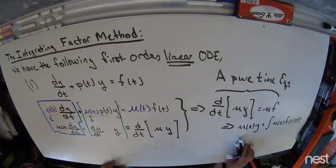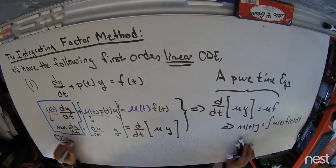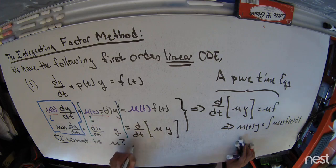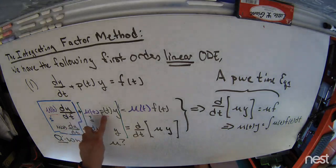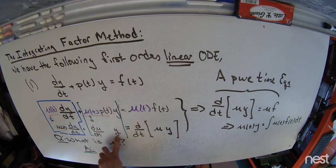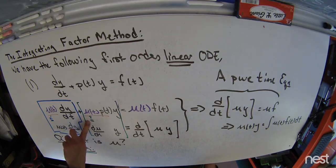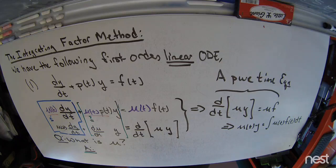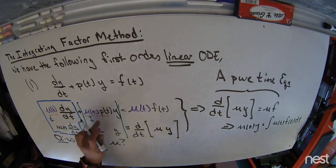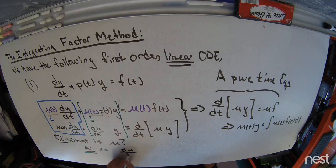The question is: what is μ? Looking to the green terms, μ times p times y equals the derivative of μ with respect to t times y. If I formally set these two equal to one another and y is not zero, then y cancels on both sides, leaving an equation for μ. The green equation, with the two terms set formally equal, gives dμ/dt equals μ(t) times p(t).